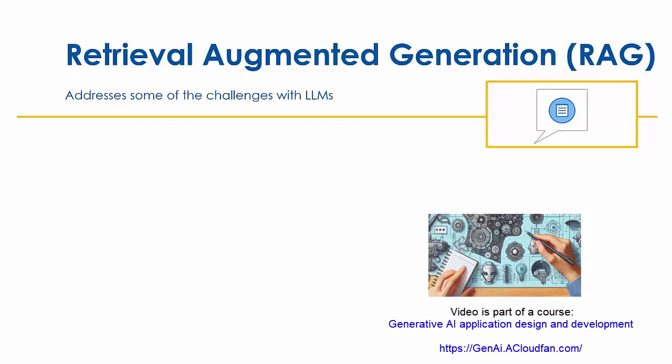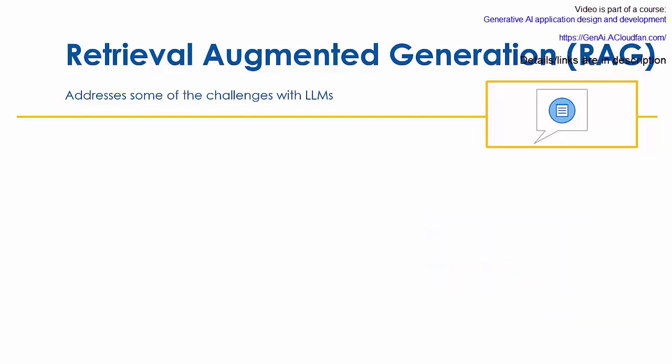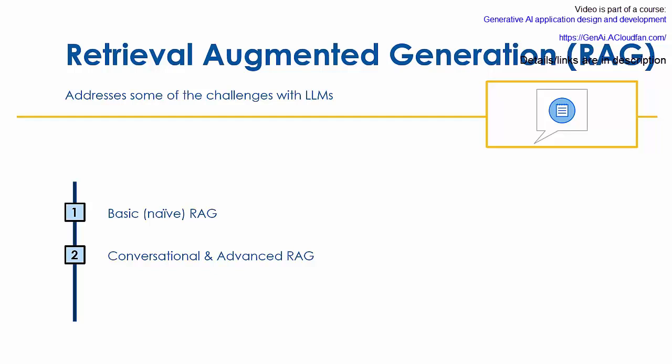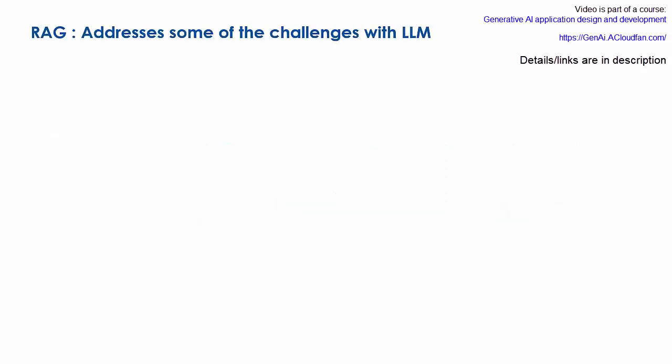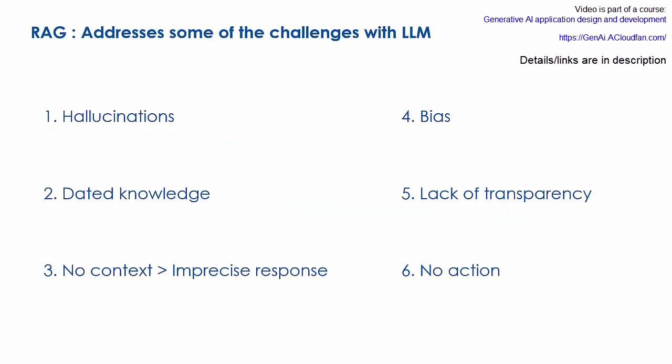In one of the earlier lessons I introduced you to retrieval augmented generation, or RAG. In this lesson we'll dive deeper into the realization of a basic RAG pipeline, and I'll also introduce you to the conversational and advanced RAG pipelines. You will also see a simple RAG pipeline in action. The purpose of the retrieval augmented generation or RAG technique is to ground an LLM by allowing it to access and use information from a reliable external source before generating a response. This helps in addressing some of the common LLM challenges.